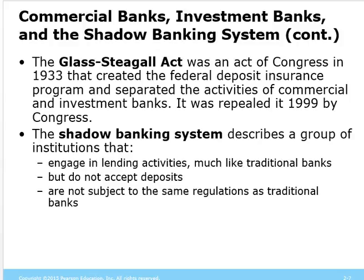We also have a shadow banking system — groups of other companies that lend money that you wouldn't think were lending money. They're not traditional banks; they don't accept deposits, and they're not subject to the same regulations as traditional banks. That's why they can do things like collateralized debt obligations, securitization, leverage, and hedge positions that would eventually help cause the Great Recession.